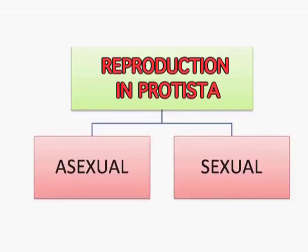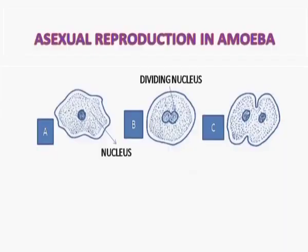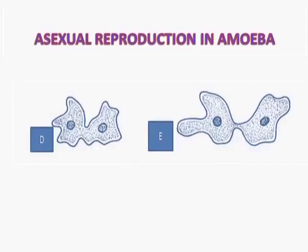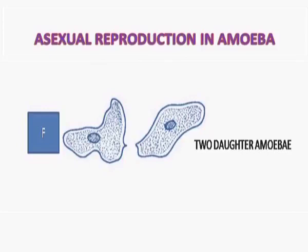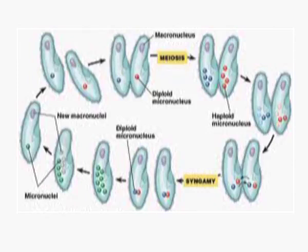Reproduction is either sexual or asexual. Asexual reproduction takes place by binary fission, where the nucleus divides first followed by the cytoplasm. A constriction — a furrow — appears in the middle, which deepens, and ultimately two amoebae are formed. Sexual reproduction is also found in some protistans; for example, Paramecium reproduces sexually by conjugation, where two paramecia come close together and a protoplasmic bridge is formed between them.